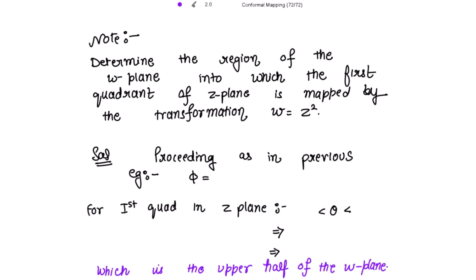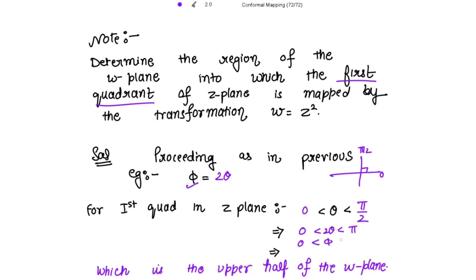Please note: if the question asks to determine the region of the w-plane into which the first quadrant of the z-plane is mapped by the transformation w = z², we proceed as before. Since φ = 2θ, and for the first quadrant in the z-plane θ lies between 0 and π/2, then 2θ lies between 0 and π. Since 2θ = φ, we get φ lying between 0 and π.